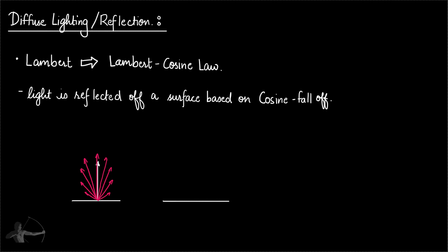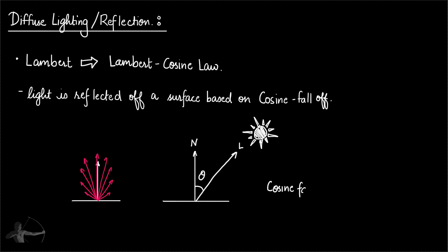Cosine falloff is the angle between the light vector and the surface normal. If this is the surface and this is the surface normal, the light vector L is the direction from the surface to the light source. The angle between N and L — where N stands for the normal of the surface and L stands for the light vector — that angle theta is the cosine falloff.